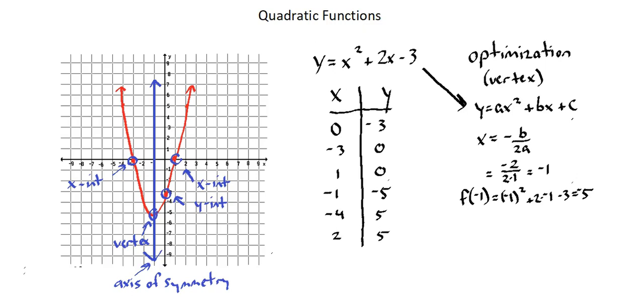We want to be able to identify the domain and range of the function. Looking at the graph, we can see that the domain is x values such that x is an element of the real numbers, with no restrictions. x can be as small or as large as we want it to be in this function.